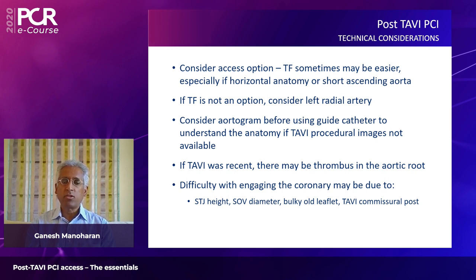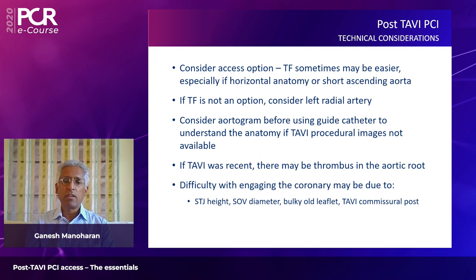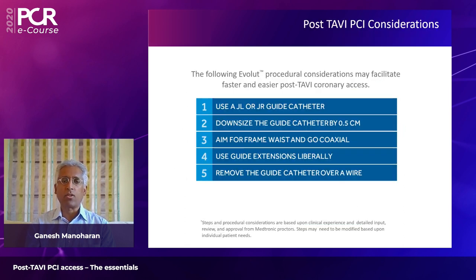Access can be challenging in some patients, so if you are new to this I would suggest using a transfemoral approach or a left radial approach initially, especially with horizontal anatomy and a short ascending aorta. Remember you can always do an aortogram before engaging the vessel. If the TAVI is recent, difficulty may be due to thrombus in the aortic root, a very short STJ, small STV, bulky calcified leaflets, or the TAVI commissure sitting right in front of the coronary arteries.